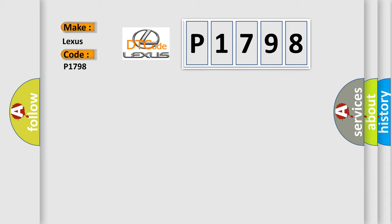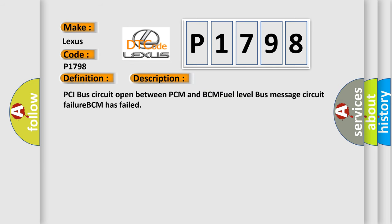The basic definition is No Fuel Level Bus Message. And now this is a short description of this DTC code: PCI bus circuit open between PCM and BCM, fuel level bus message circuit failure, BCM has failed.